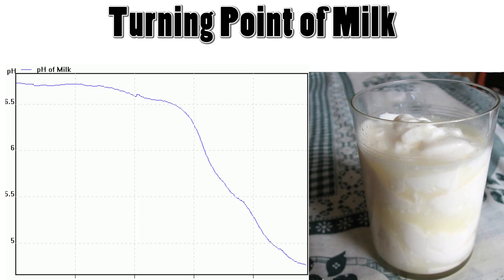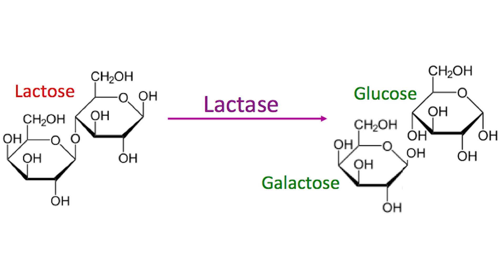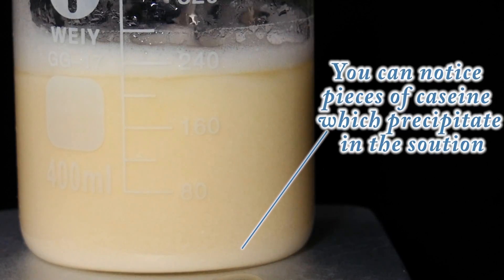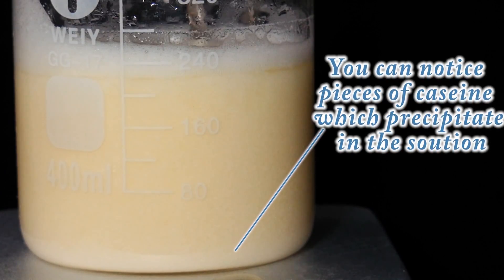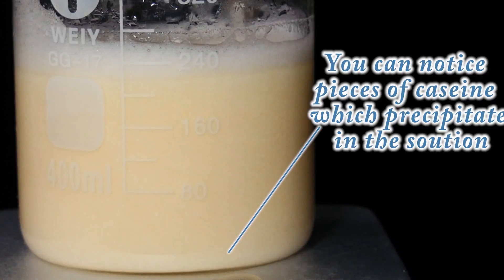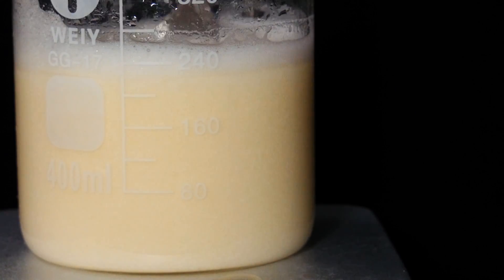We have now separated casein. Its solubility is pH dependent, and that's why we acidify the solution with a weak acid. It's important to know that we cannot use a strong acid because lactose tends to decompose when the pH is really low. We use acetic acid, which is a weak acid, and we obtain casein because its structure tends to precipitate when the pH is lower than neutral.